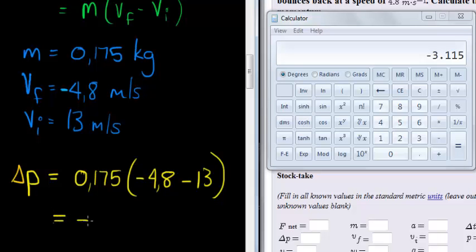It's equal to negative 3.12, and what is our unit? Again, for impulse, it's exactly the same, it's just a change in momentum. So kilogram meters per second, that's our unit.